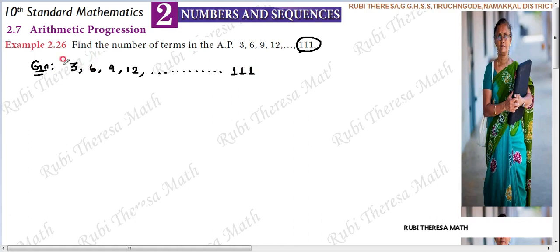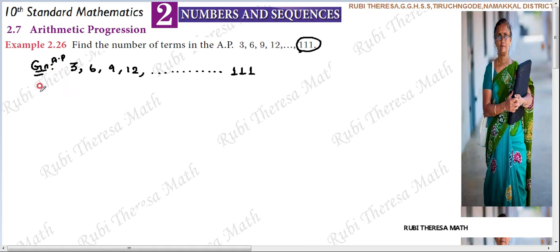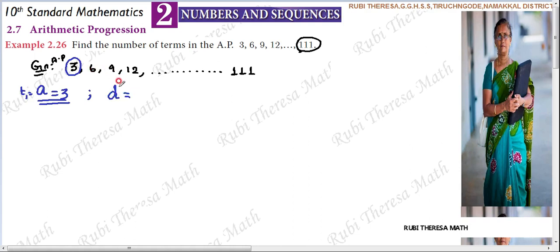So now let's collect the data from this given AP. The first term, T1, can be represented as A. The first term is 3, so A equals 3. Since this sequence is an AP, the common difference D is T2 minus T1, which is 6 minus 3, that is equal to 3. Therefore the common difference D equals 3.